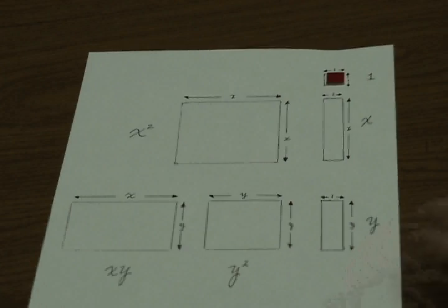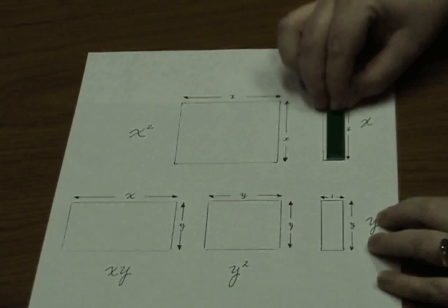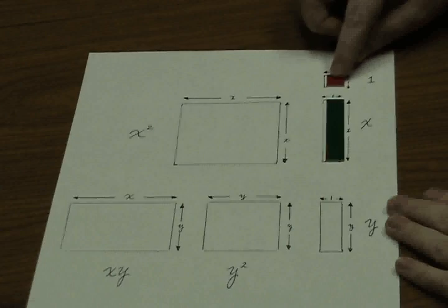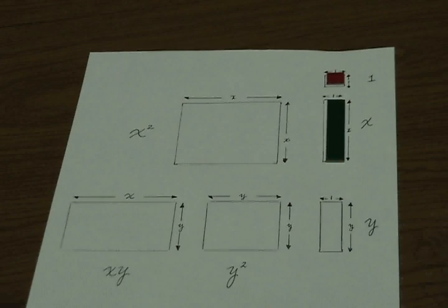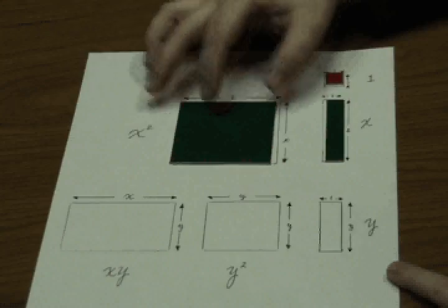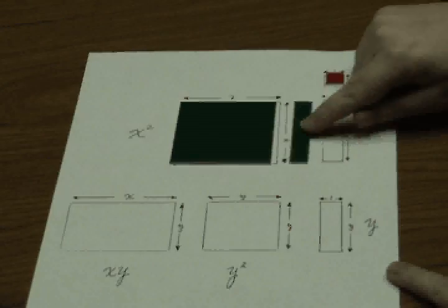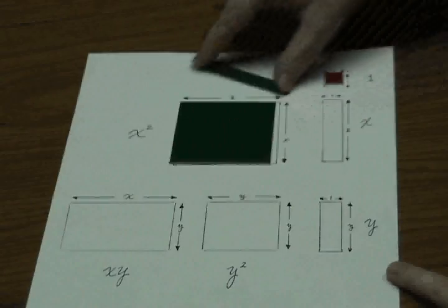The next tile represents x, because using an area model, its dimensions are 1 by x. This next tile represents x squared, because the length is x and the width is also x.